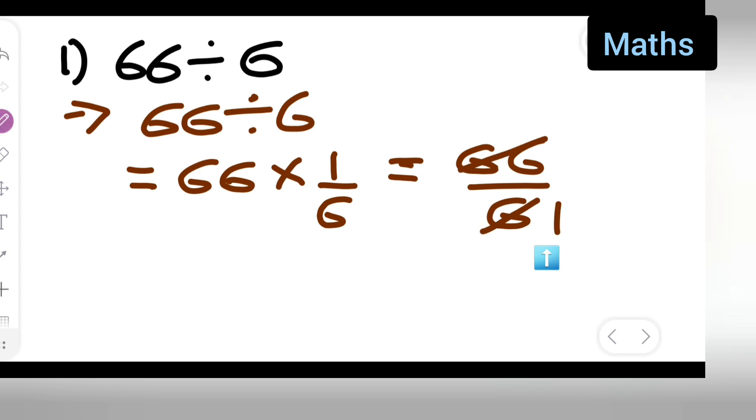Six goes into 66 eleven times. Your answer will be equal to 11. So your answer is 11 after canceling. I hope you have understood how to divide 66 divided by 6. Thanks for watching.